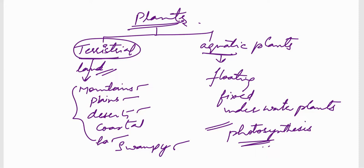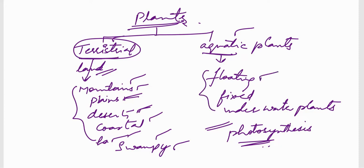Terrestrial plants means the plants which are present on land, but land is again divided into many forms: mountains, plains, deserted areas, coastal, heavy rainfall areas, and swampy areas. Aquatic plants are those plants which are present in water, and they are classified into three: floating plants, fixed plants, and underwater plants. These topics you are going to deal with in this lesson, along with the very important topic called photosynthesis.